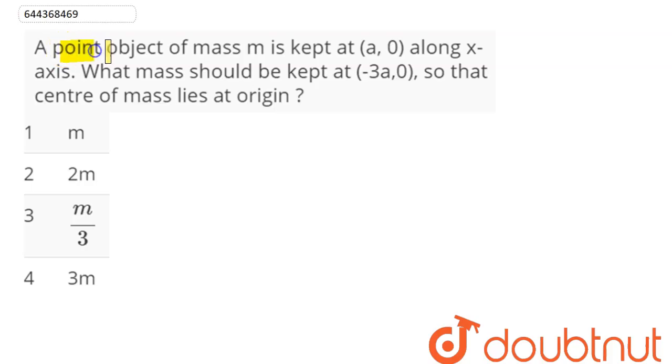Question is, a point object of mass m is kept at (a,0) along x-axis. What mass should be kept at (-3a,0) so that the center of mass lies at origin?